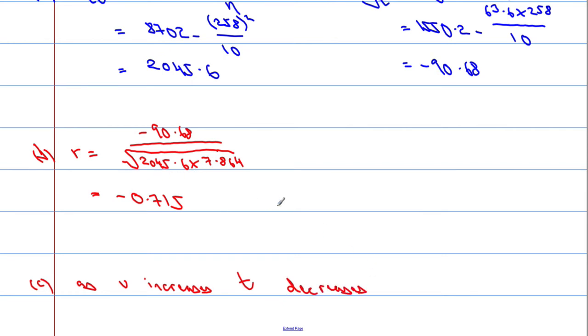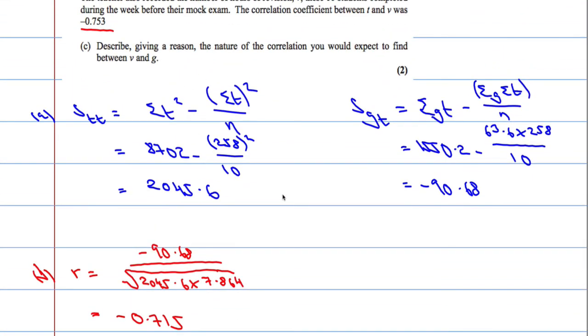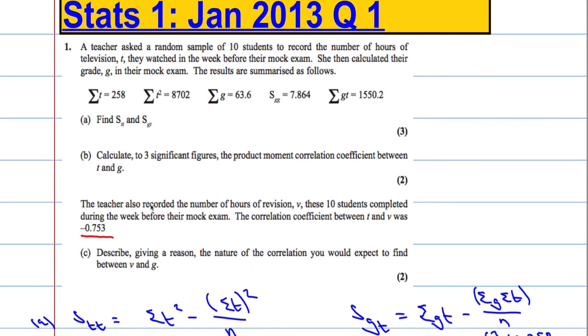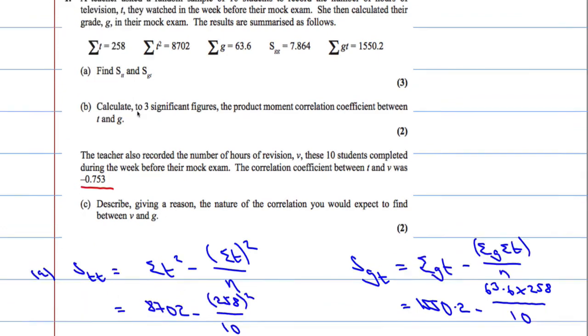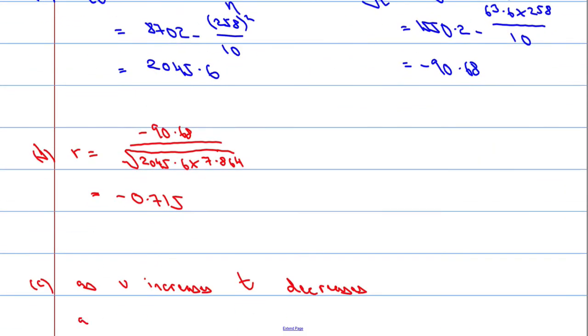And then we've also found that as the number of hours watching television decreased, the grade increased. So as T decreased, G increased.